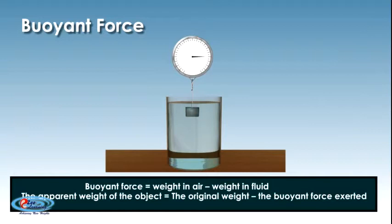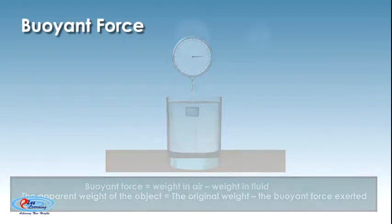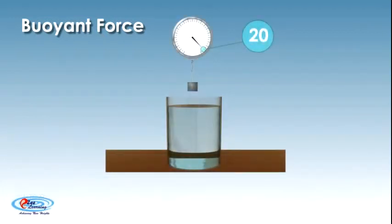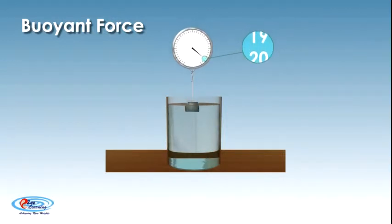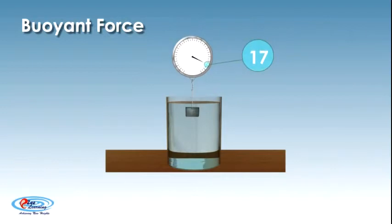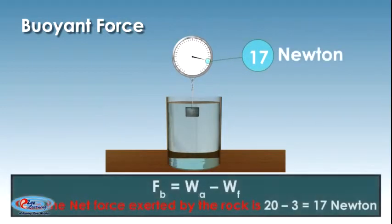F_b equals W_a minus W_f. For example, if a box which is hanging on a thread in a pool initially exerts a force of 20 N, and the force of buoyancy exerted back by water is 3 N, then the net force exerted by the rock is 20 minus 3 equals 17 N.